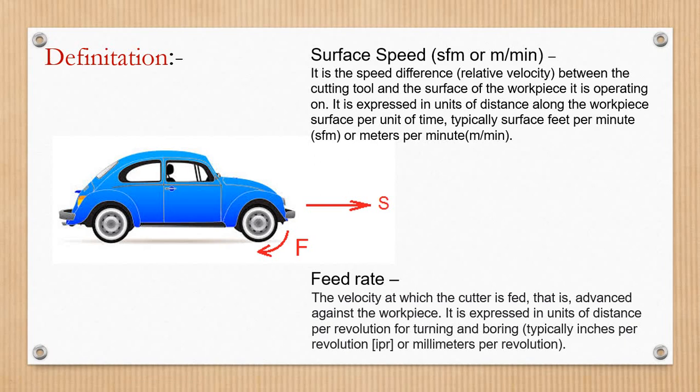What is surface speed? Surface speed is the speed difference or relative velocity between the cutting tool and the surface of the workpiece. It is the speed at which the cutter is fed against the workpiece, expressed in units of distance per unit of time along the workpiece surface per time.